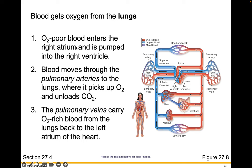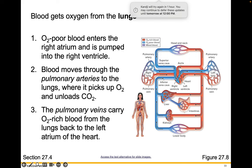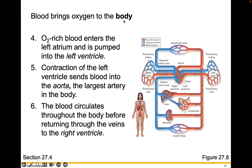Oxygen-poor blood enters the right atrium and is pumped into the right ventricle. Blood moves through the pulmonary arteries to the lungs, where it picks up oxygen and unloads carbon dioxide gas. The pulmonary veins carry that oxygen-rich blood from the lungs back to the left atrium. Oxygen-rich blood then enters the left atrium and is pumped out of the left ventricle. Contraction of the left ventricle sends blood into the aorta — the largest artery in the body — and it circulates throughout the body before returning through the veins to the right side of the heart.